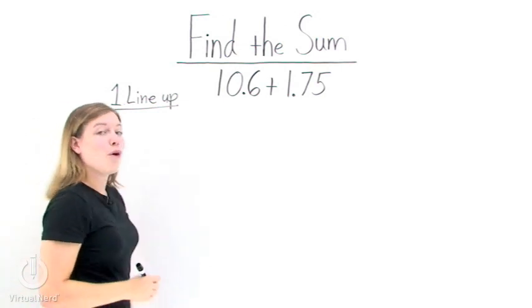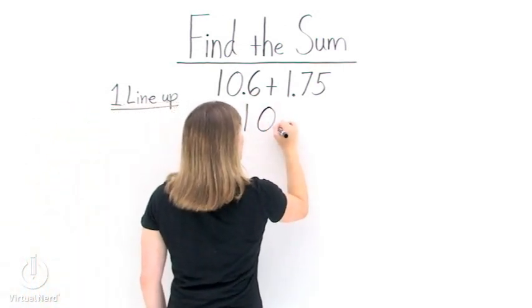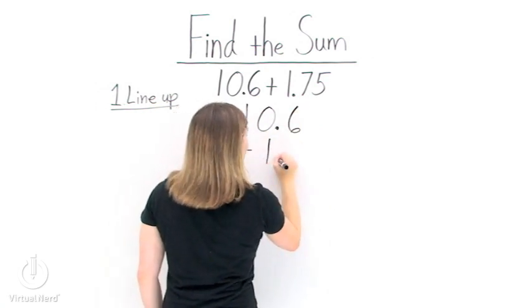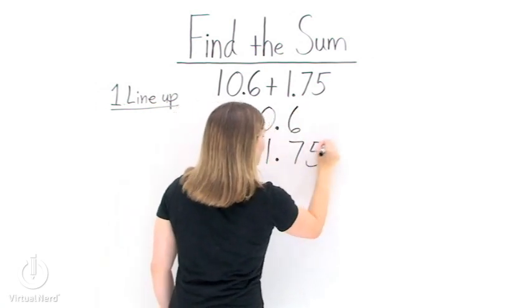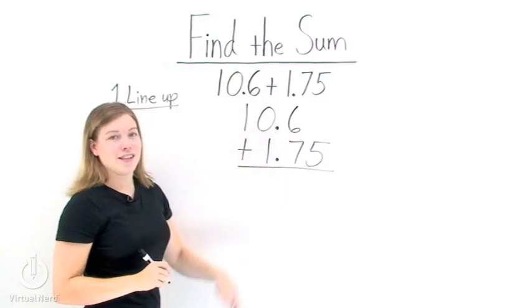When we do this, however, we also want to make sure to line up our decimal points. So we'll have 10.6 plus 1.75. Notice that our decimal points are now lined up one directly on top of the other.